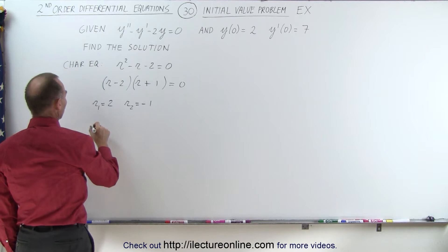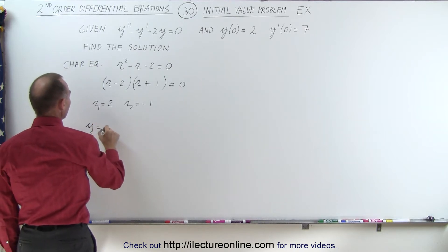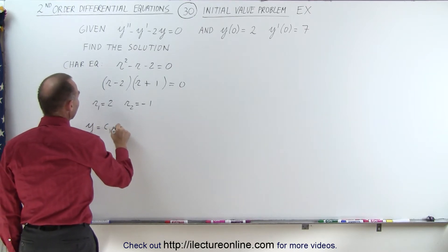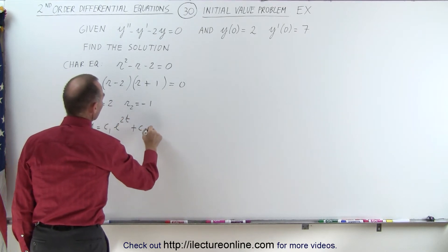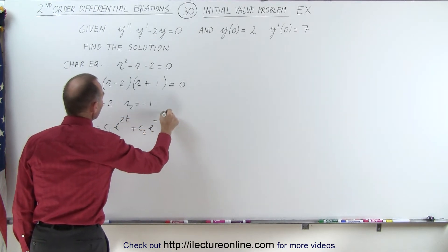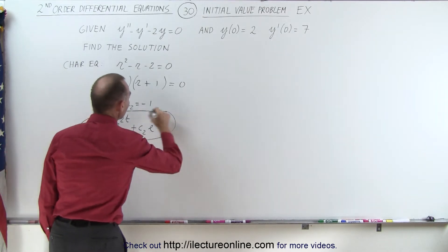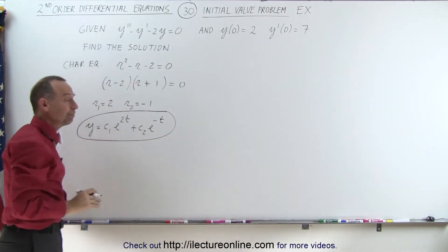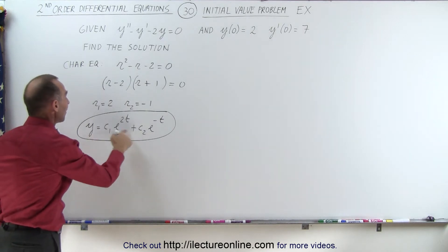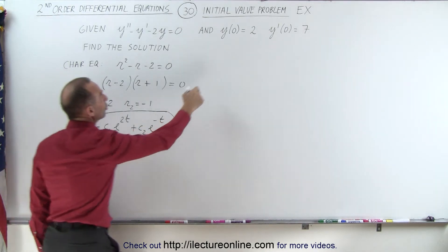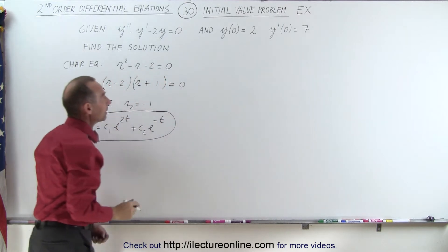So the general solution looks as follows. y is equal to c1 e to the 2t plus c2 e to the negative t. Now, that's the general solution to this differential equation. Now, of course, we want to find the exact solution by finding the values for c1 and c2 using these initial values indicators.